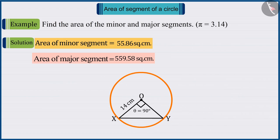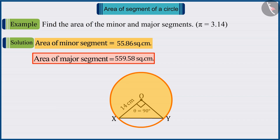So, we can say that the area of the minor and major segments in the circle are 55.86 square centimeters and 559.58 square centimeters.